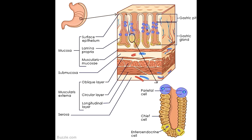The gastric mucosa refers to the inner lining of the stomach. Large, wrinkle-like folds called rugae lie in the mucosa when the stomach is empty; these flatten as the stomach fills and the stomach wall becomes distended. It contains gastric glands as well as pits. The mucosa is divided into the epithelial layer (non-ciliated simple columnar epithelium), lamina propria (a layer of thin connective tissue), and muscularis mucosae (a thin layer of smooth muscle).